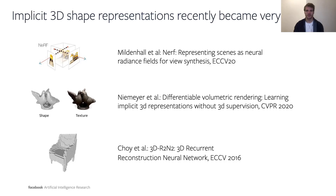Implicit representations recently became very popular since several methods such as neural radiance fields have demonstrated very impressive results. Since PyTorch3D is currently supporting only rendering of meshes or point clouds, we decided to implement a set of tools for rendering implicit surfaces to also facilitate research in the area of implicit function rendering.